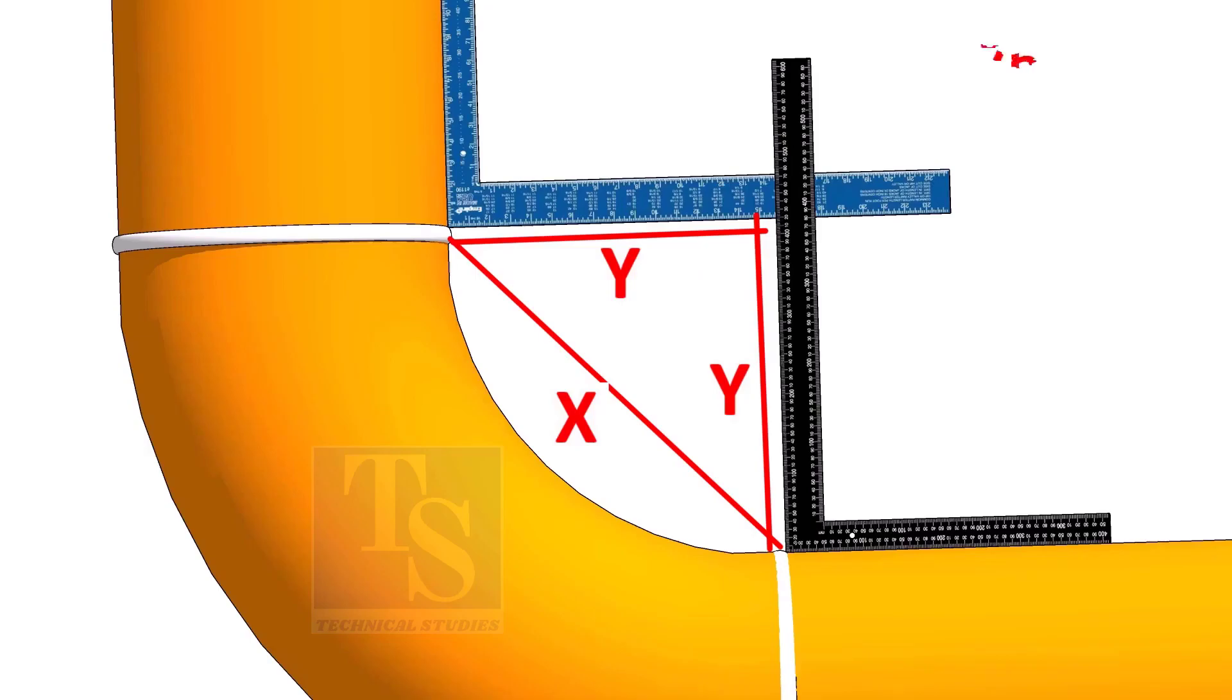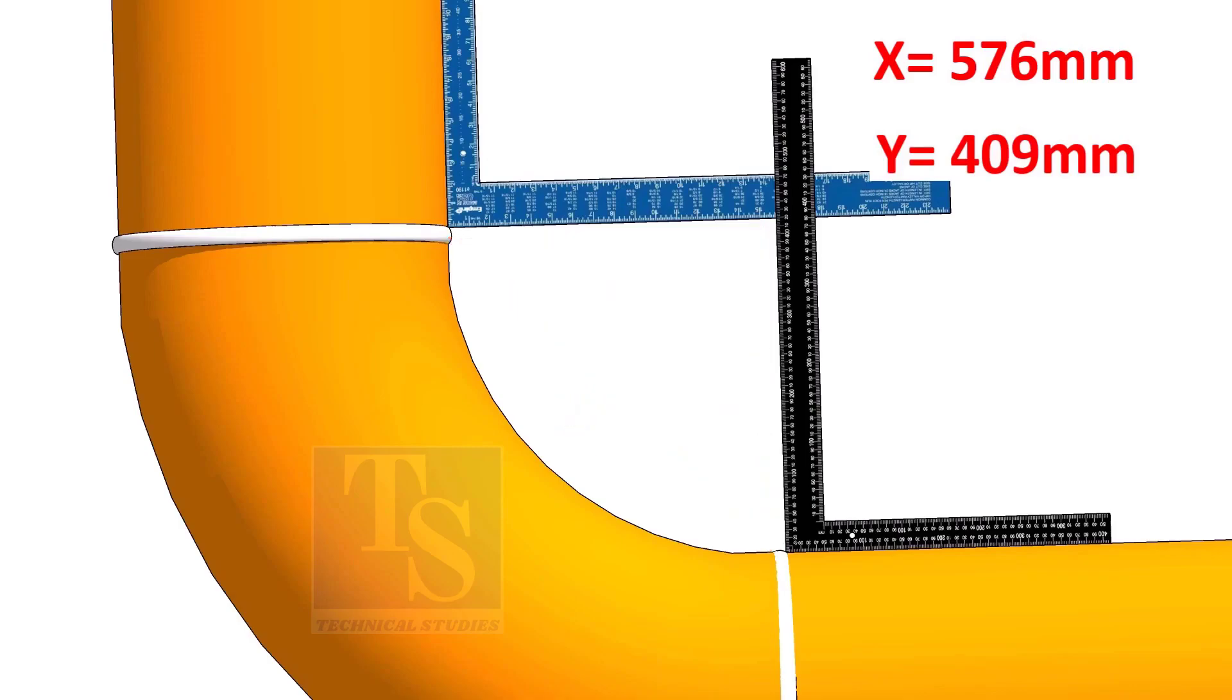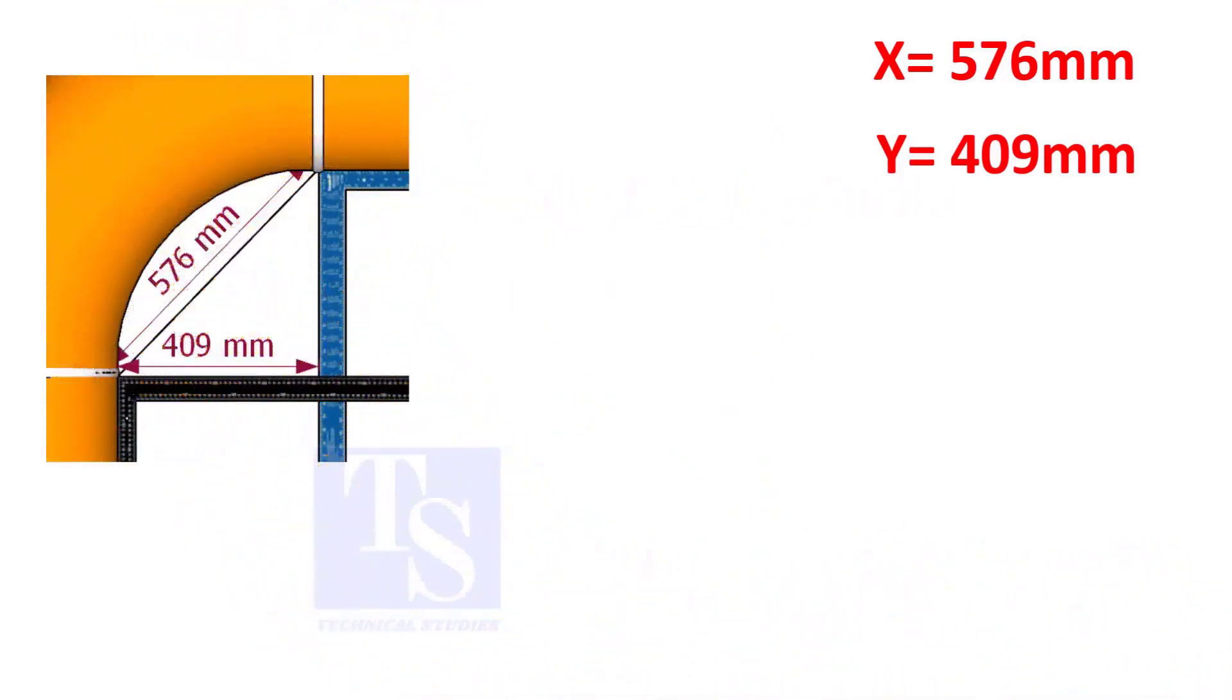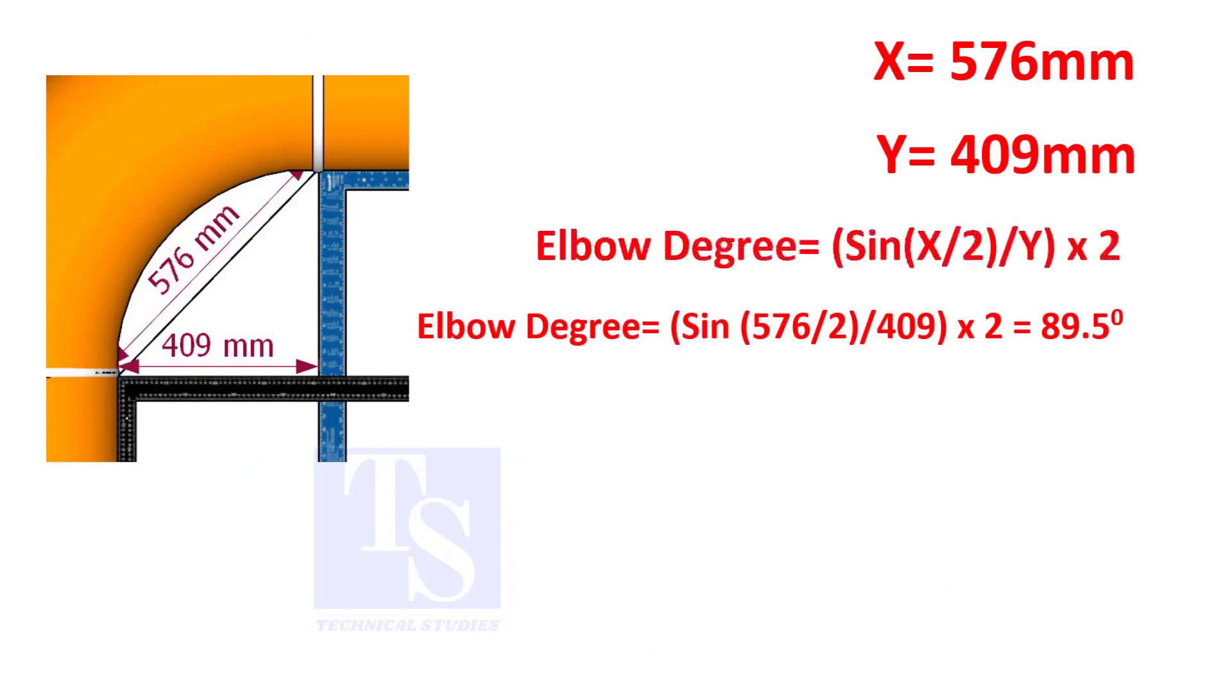Assume that the value of x is 576 and the value of y is 409 millimeters. Apply the formula. The answer is 89.5 degrees.